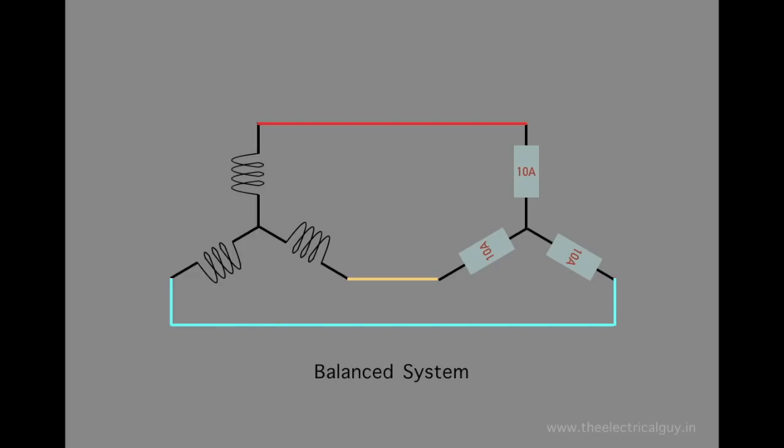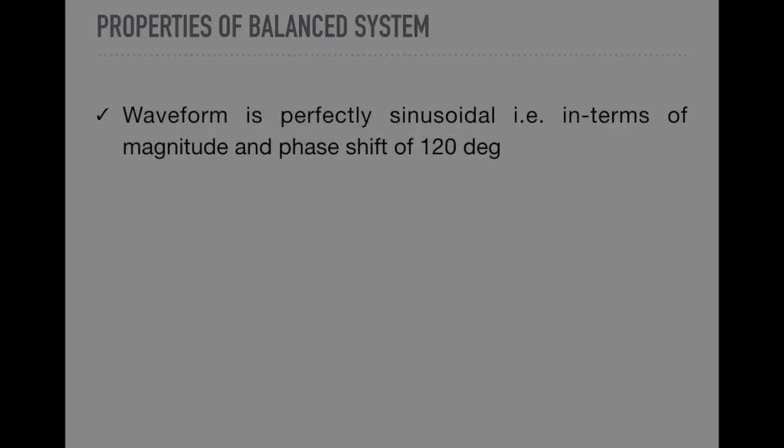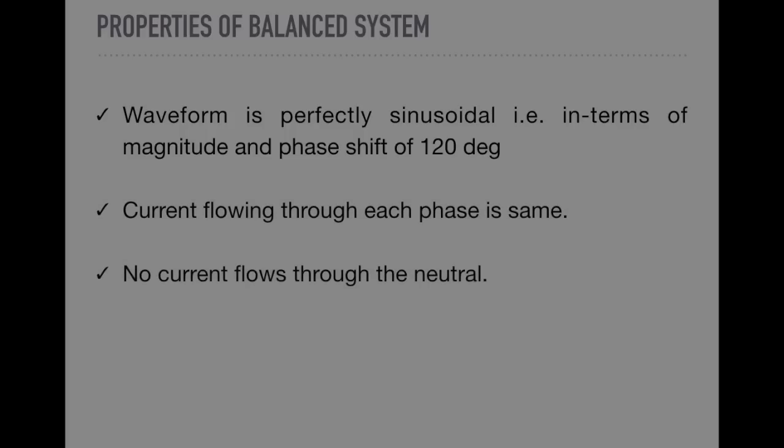So what are the properties of a balanced system? Waveform is perfectly sinusoidal in terms of magnitude and phase shift of 120 degrees. Current flowing through each phase is same. No current flows through the neutral. Power loss is very low or not present. Of course, such system is ideal and existence of which is doubtful.